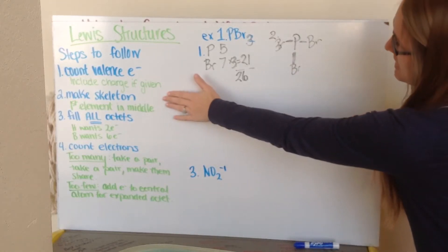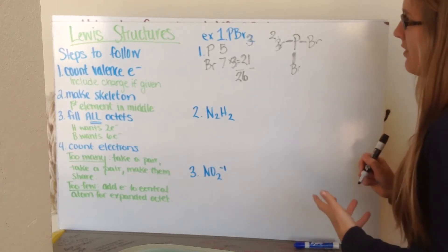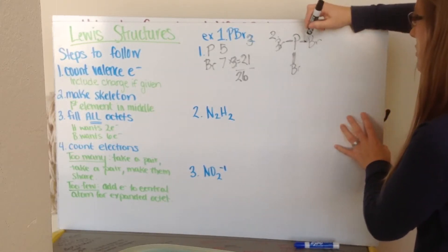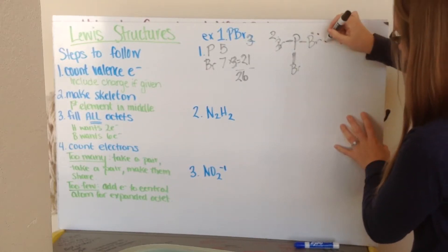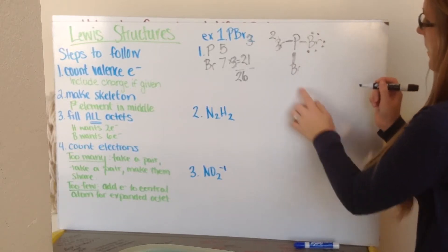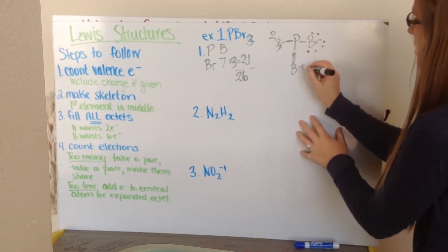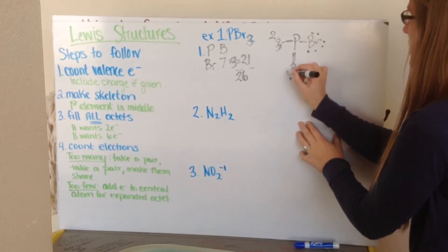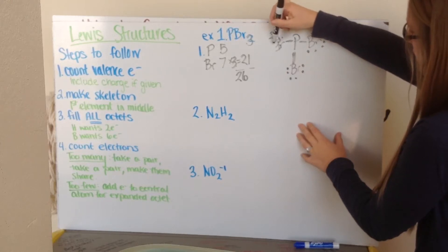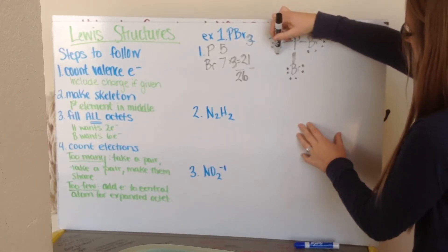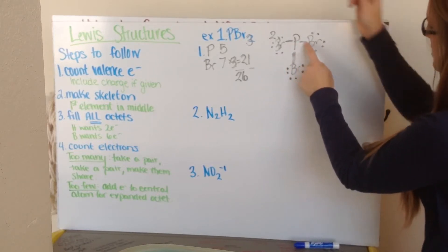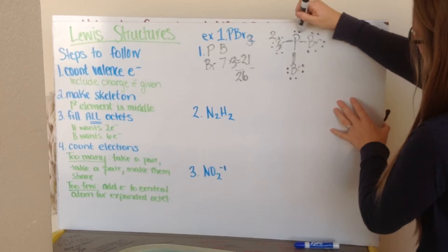So I go ahead and I've made my skeleton, and now I need to fill everybody's octets. Everybody wants 8 electrons. So I'm going to start with bromine. It has 2 electrons here. Then I'm going to add 1, 2, 3, 4, 5, and 6, just like I was drawing its Lewis structure. Bromine, again, has 2, 3, 4, 5, 6, 7, and 8. Again, 2 here, 3, 4, 5, 6, 7, and 8. And phosphorus has 2, 4, 6, so it needs 2 more, 7, and 8.